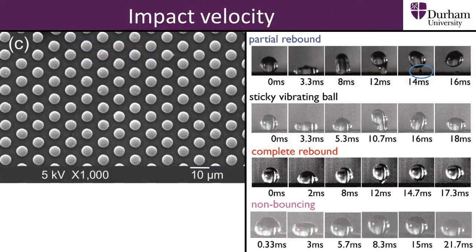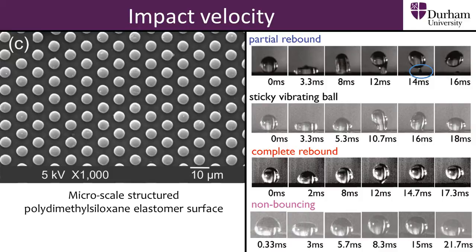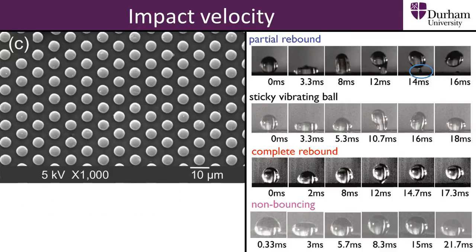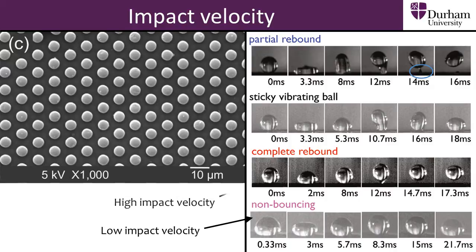Here are some images of droplets that have been captured with high speed cameras. A micro scale structured surface was used in these tests. In the images the impact velocity has been varied. At low speed we see the non-bouncing case. However at higher speed there are a number of different outcomes as the droplet has more energy. In the cases of partial rebound and the sticky vibrating ball we see how pinning from the surface hinders the droplet's ability to rebound completely.